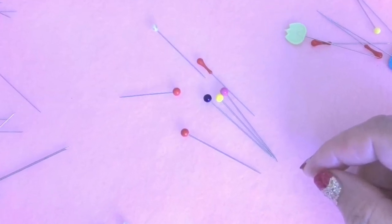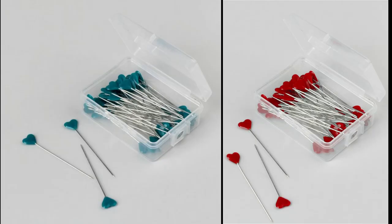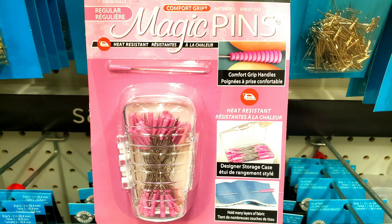These are good all-around pins as long as you don't need to iron your project. You can also find the heads in different shapes, such as a heart, which can help make them easier to grab. Recently they made pins with plastic heads that are heat resistant. In stores they are called magic pins. These heads have a cylindrical shape. They are called magic pins I guess because they are heat resistant and easy to grab.